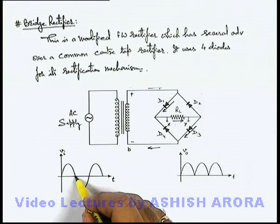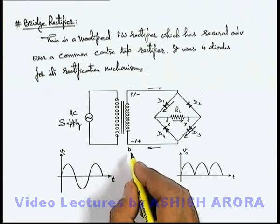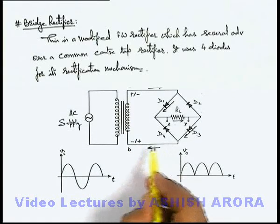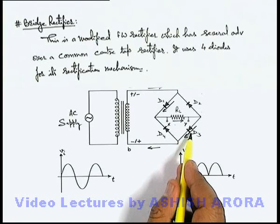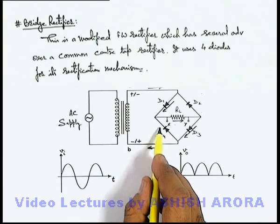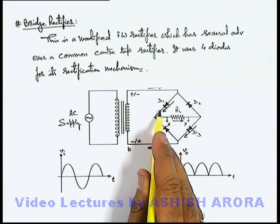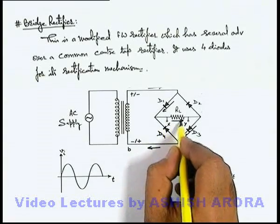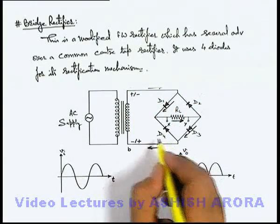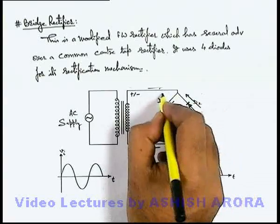After this half cycle, when the negative half cycle starts, the polarity of the terminals reverses. Terminal B is now positive and terminal A is negative. In this situation, current flows from terminal B. Since D3's N side is connected to the positive terminal, D3 will be reverse biased, and current will pass through D4 which is forward biased. D1 is reverse biased because current comes onto the N side of D1. So current passes through the load in the same direction, then through D2, and finally reaches terminal A.